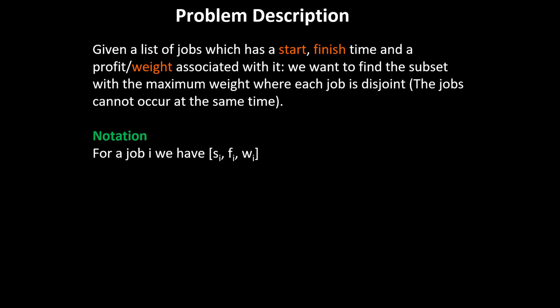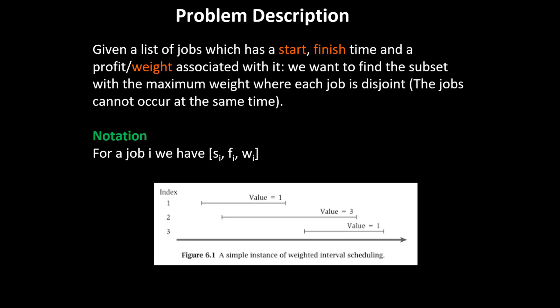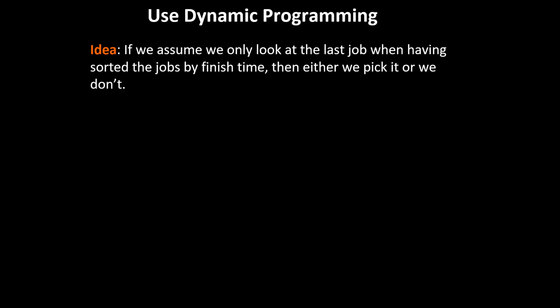The notation we'll use is that for a job i, we have a starting time, finish time, and a weight. For a quick example, consider three jobs. If we take the first job, we cannot pick job two because they overlap, but we can still pick job three, giving a total weight of two. Or we consider taking job two for a total weight of three, but then we cannot pick job one or job three. So in this case we take job two for a total weight of three, which is greater than two.